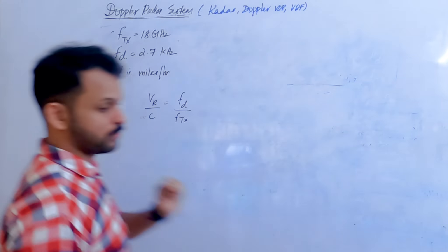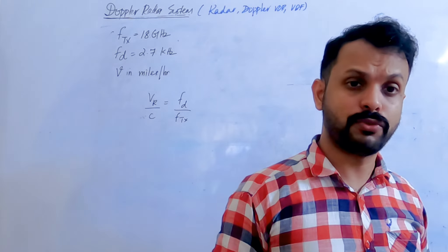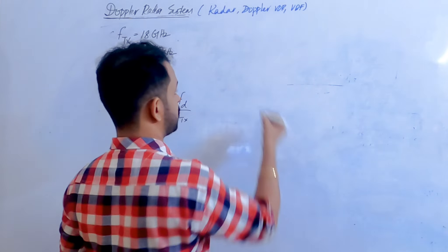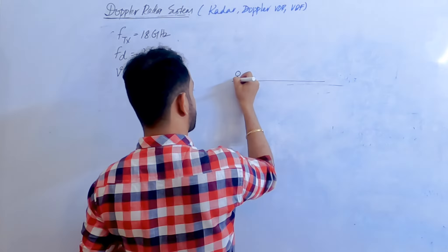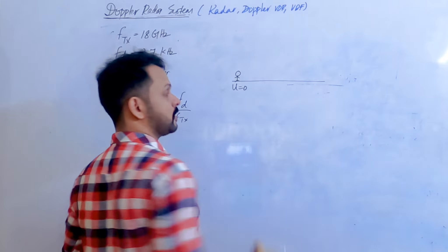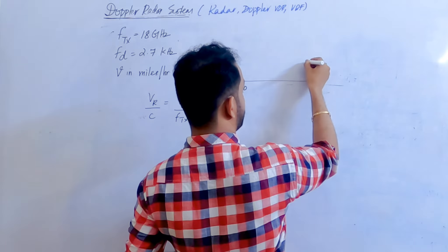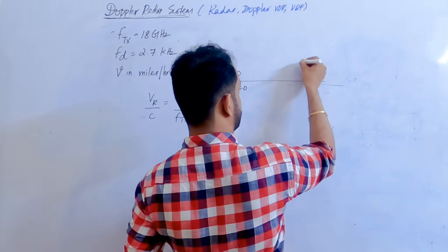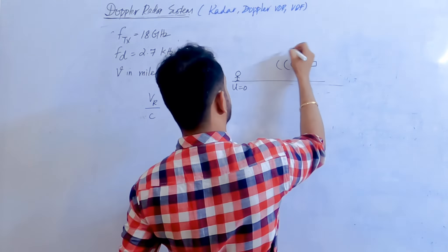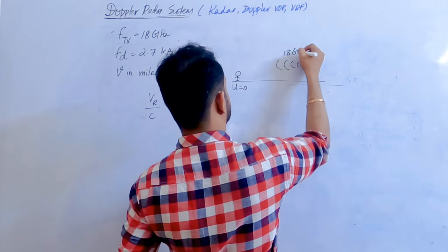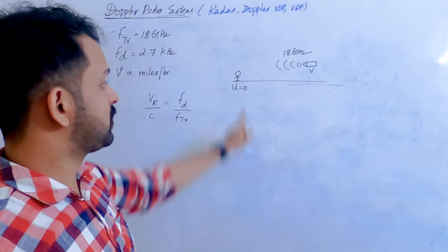We need to find velocity in miles. There is an object coming towards a stationary observer. The observer's velocity is zero, and the object is emitting frequencies at 18 gigahertz. You're asked to find the velocity of this object approaching the stationary target, with a frequency shift of 2.7 kilohertz observed.